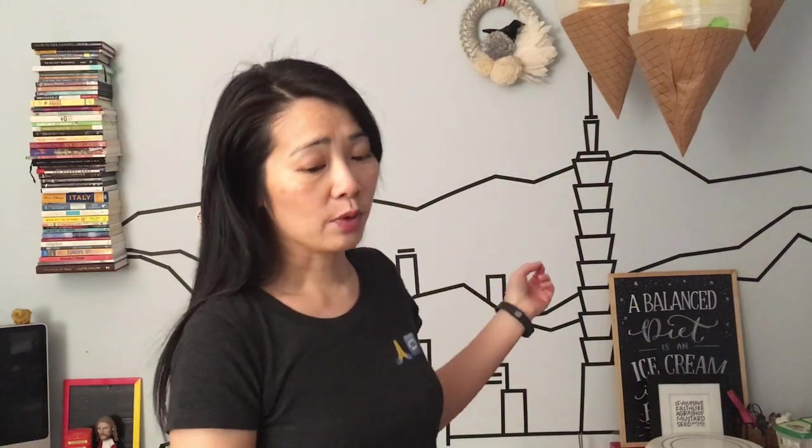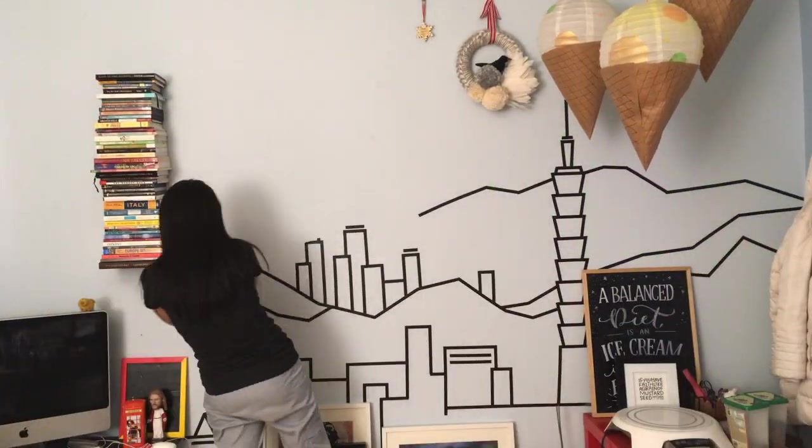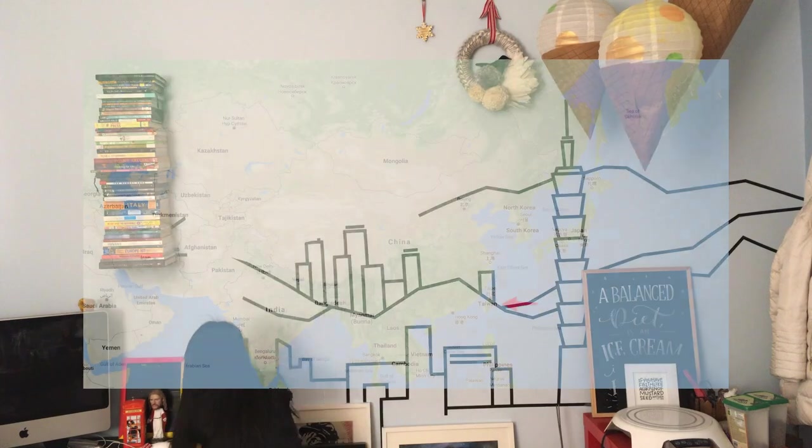Hi everyone, this is Vivian — welcome back to my channel. Today I'm going to do another tape art. Behind me is a tape art I did a long time ago; it's a cityscape of Taipei where I was born. So let's take down the wall first and we'll see how it goes. Taipei is the capital of Taiwan.